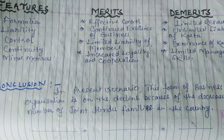As far as the present scenario is concerned, the Hindu undivided family business is on the decline because of the decreasing number of Hindu undivided families in the country. Today in this lecture, we discussed the various forms of business organization, especially sole proprietorship and joint Hindu family business.